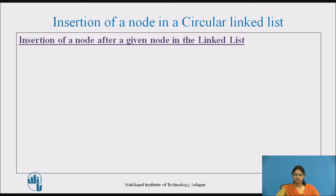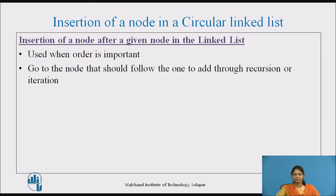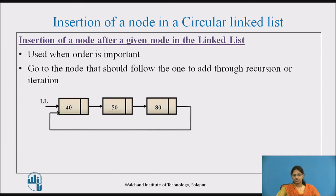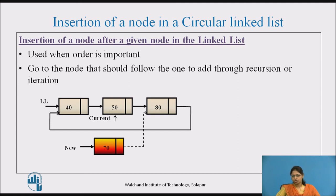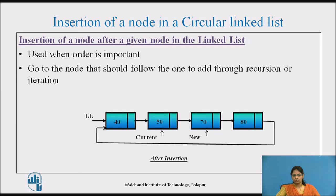Let's see insertion of a node after a given node. This method is used when order is important. Consider a sorted circular linked list — we want to add a new node between 50 and 80. We traverse to the node after which the new node should be added. Then the next part of the new node is assigned to the next of the current node, and the next of the current node is assigned to the new node. After insertion, the new node is placed between 50 and 80.